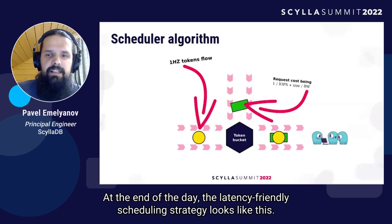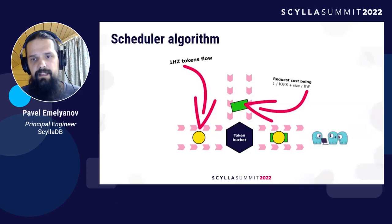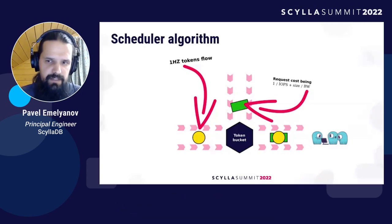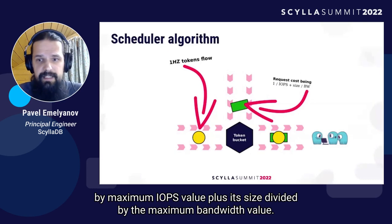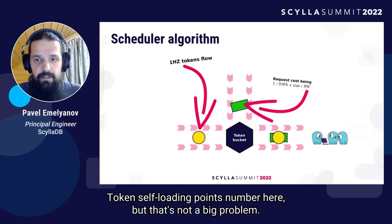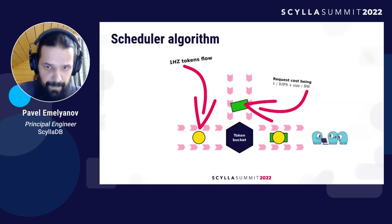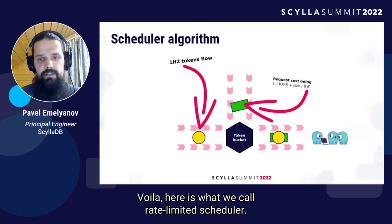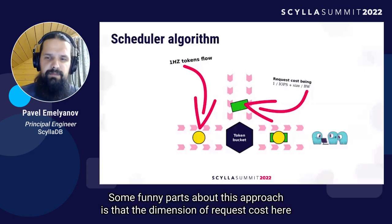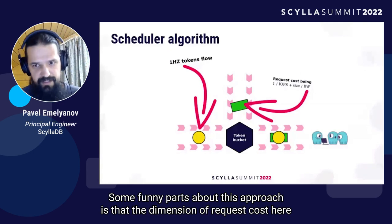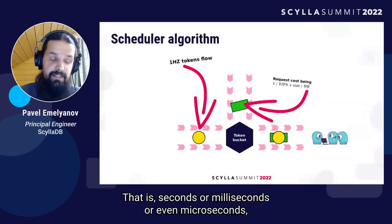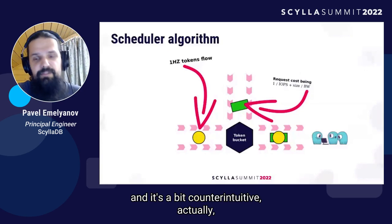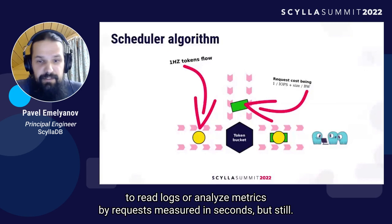In the end of the day, the latency-friendly scheduling strategy looks like this: get a token bucket, fill it with tokens at 1 Hz rate, and measure each incoming request's cost as 1 divided by the maximum IOPS value plus its size divided by the maximum bandwidth value. Tokens are floating-point numbers here, but that's not a big problem. This is what we call the rate-limited scheduler. A funny part about this approach is that the dimension of request cost here is neither bytes nor items nor bytes-per-second, but just duration — that is, seconds, milliseconds, or even microseconds. It's a bit counterintuitive to read logs or analyze metrics where requests are measured in seconds, but still.